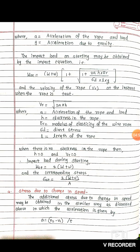The impact load on starting may be obtained by the impact equation: WST equals (W plus w) into [1 plus square root of (1 plus 2aH into ER divided by sigma D into L into G)].